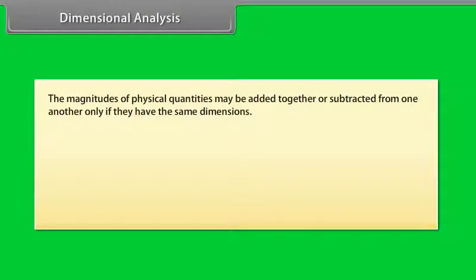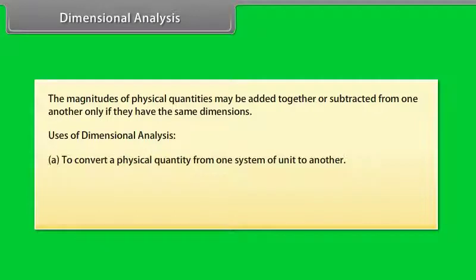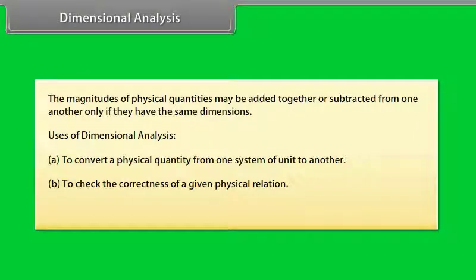Dimensional analysis. The magnitudes of physical quantities may be added together or subtracted from one another only if they have the same dimensions. Uses of dimensional analysis: A, to convert a physical quantity from one system of unit to another. B, to check the correctness of a given physical relation. C, to establish a relation among the given physical quantities.